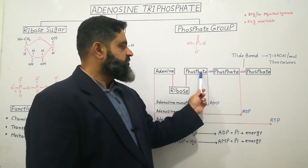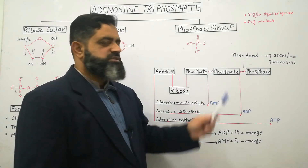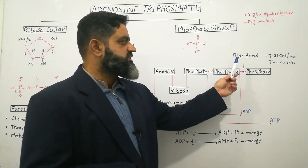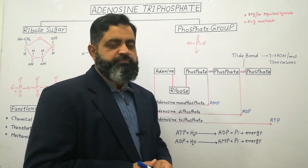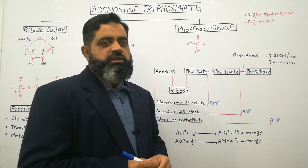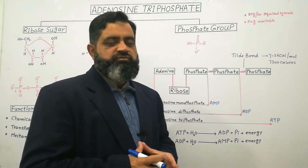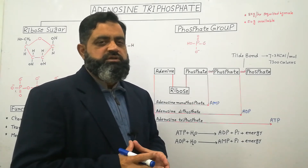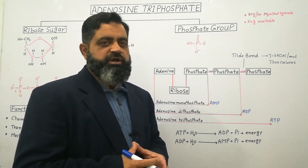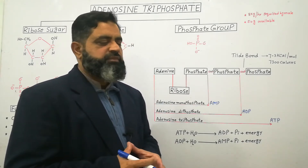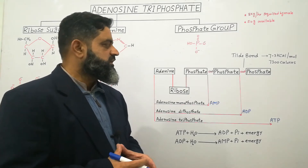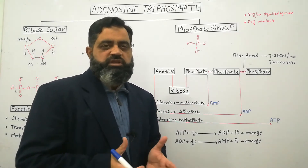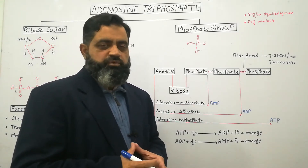Between the two phosphate molecules there is a wavy bond which is known as a tilde bond. During the formation of tilde bonds, energy is required which comes from the mitochondria, and that energy is 7.3 kilocalories per mole.